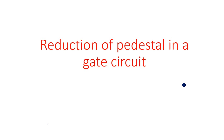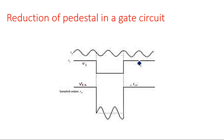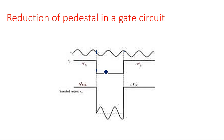In this video I am going to explain about the reduction of pedestal in gate circuits. In the previous video I explained what pedestal means — it is when a sinusoidal signal is superimposed on the control signal. Generally we need two signals: one is the control signal and another is the input signal which we want to transmit through the sampling gate. The gating pulse width is tg.